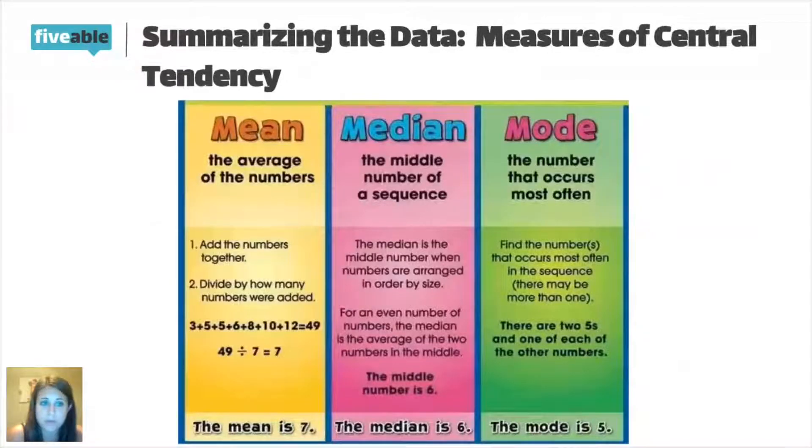So we're going to talk about it briefly, but I'm not going to spend a ton of time on it. You have to know that the mean is the average of the numbers. You add all of the numbers together—there's a data set there, 3 plus 5 plus 5 plus 6 plus 8 plus 10 plus 12—that equals 49. To get the average, we divide by the number of data points we have, which is 7, so 49 divided by 7 is 7.